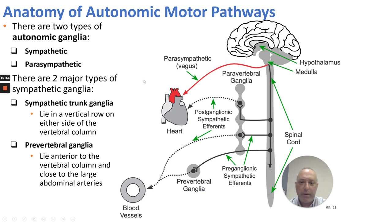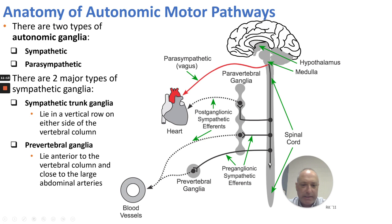Looking at the autonomic ganglia of both the sympathetic and parasympathetic: there are two major types of sympathetic ganglia — the sympathetic trunk ganglia and the prevertebral ganglia. The sympathetic trunk lies in a vertical row on either side of the vertebral column. The prevertebral ganglia lie anterior to the vertebral column and close to the large abdominal arteries. This autonomic pathway shows effectors like the heart, blood vessels, and other smooth muscle effectors.